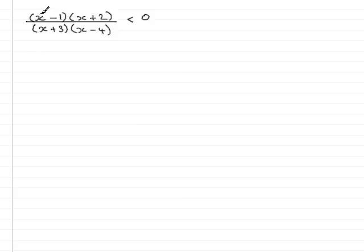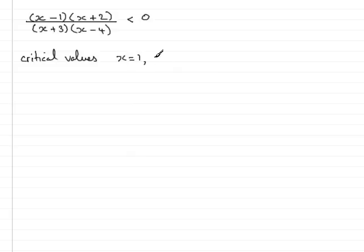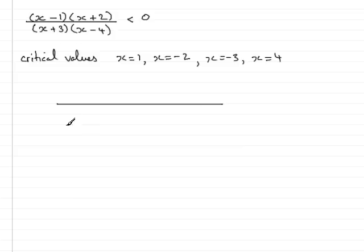Critical values are the values of x where the top or bottom would equal zero. The critical values for the top would be x equals 1 and x equals minus 2. The critical values for the bottom would be x equals minus 3 and x equals 4.